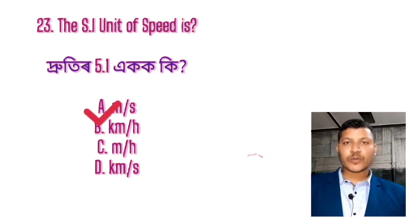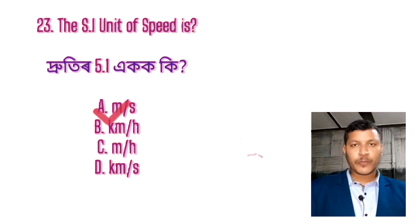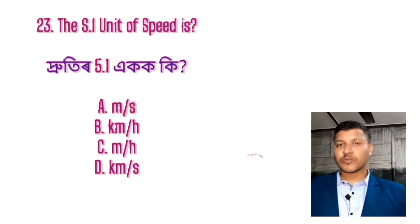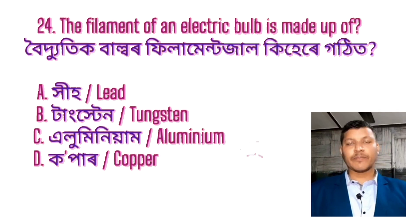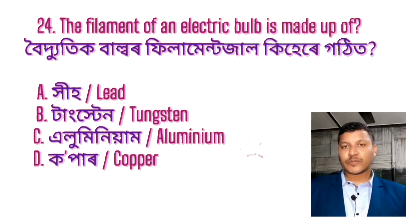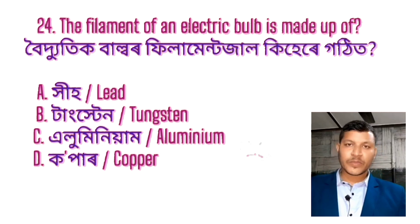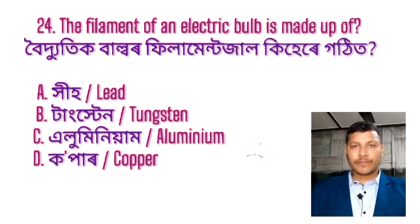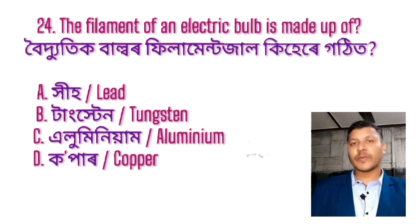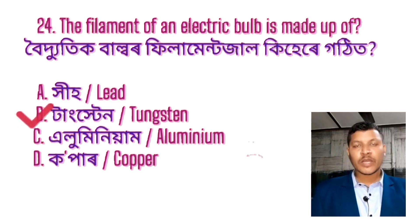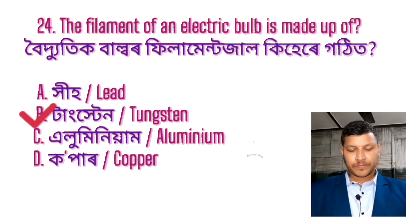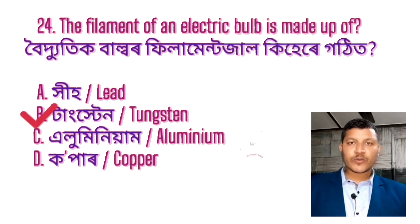Question number 24: The filament of an electric bulb is made up of — options given. The answer is option B — tungsten. The filament of an electric bulb is made of tungsten.